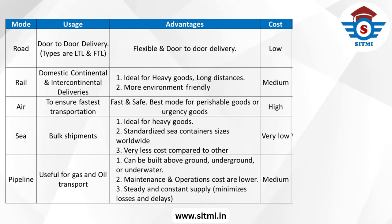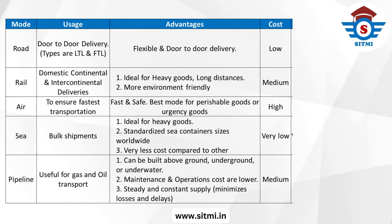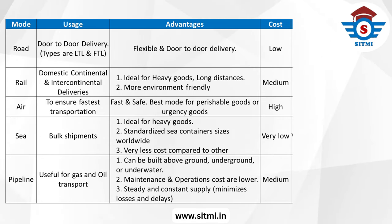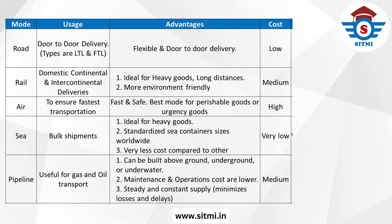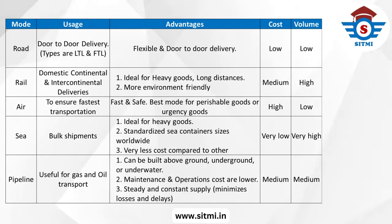As far as cost is concerned: road transportation cost is low, rail transportation cost is medium, and air transportation cost is always on the higher side compared to all other transportation modes. Sea transportation costs are very low compared to other modes, and pipeline transportation cost is similar to rail, which is medium cost.